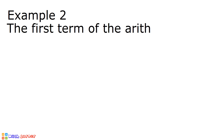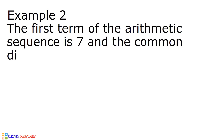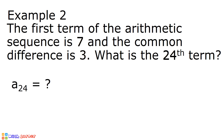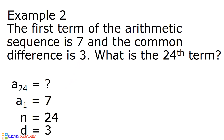Example number 2. The first term of the arithmetic sequence is 7 and the common difference is equal to 3. What is the 24th term? Again, let us find all the given values. Since we are looking for the 24th term, that is a sub 24. 7 is our first term, n is equal to 24, and the common difference is equal to 3.